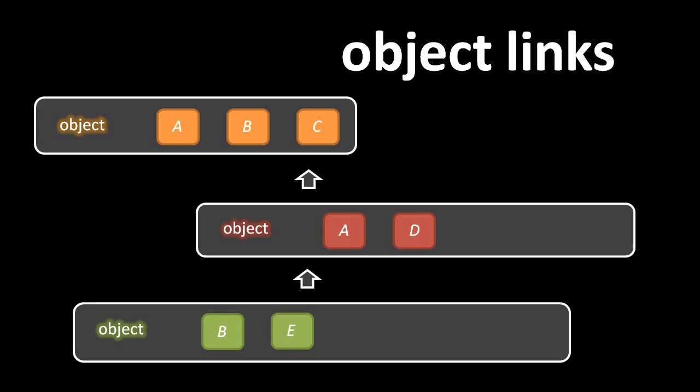JavaScript has this concept of object links whereby an object can have a special link to another object. Let's say we have three objects: one we call orange, one we call red, and one we call green. The orange object has three properties: A, B, and C.